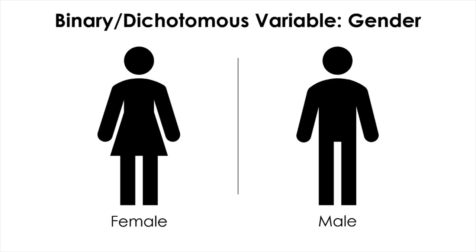You also cannot rank order the categories in any direction. Say you assign one for male and two for female — does that mean male is better than female just because male is assigned to one? So the only possible operations on the values of nominal variables are counting, meaning you can only count how many times each category occurs, which is a statistic called frequency. Another possible operation is to compare whether any two categories are identical or not. And when two categories are different, usually nothing can be exactly said about how much they differ.